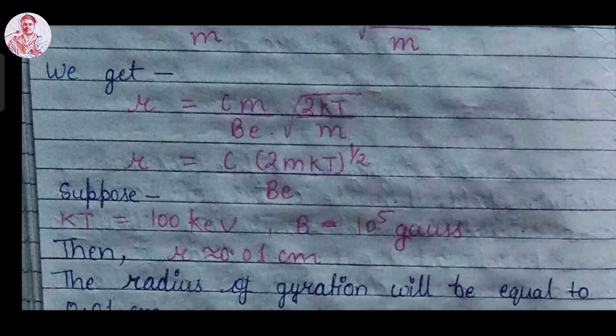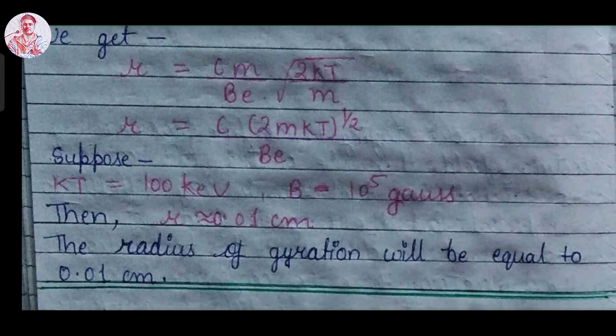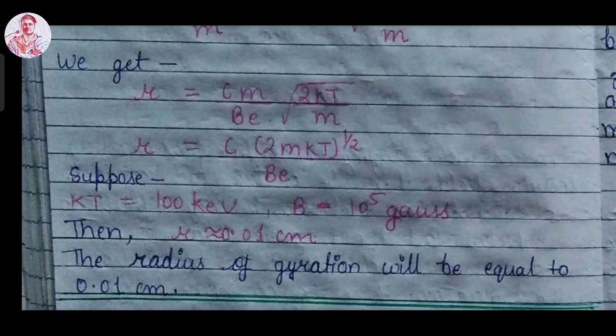The radius of gyration will be equal to 0.1 centimeter. This is all about plasma confinement; in the next video we will discuss about various techniques of plasma confinement.